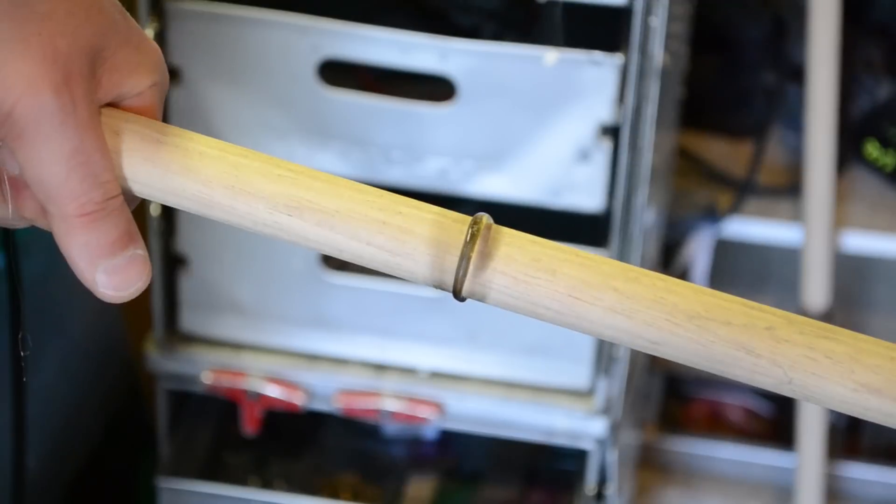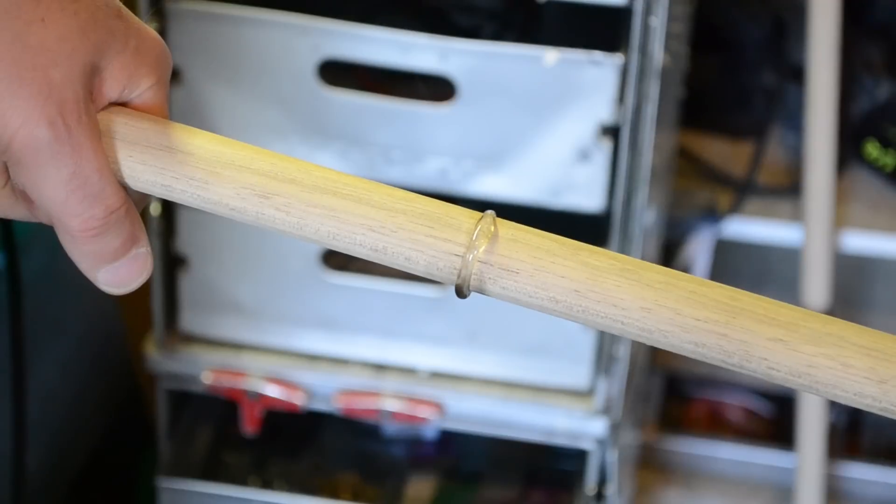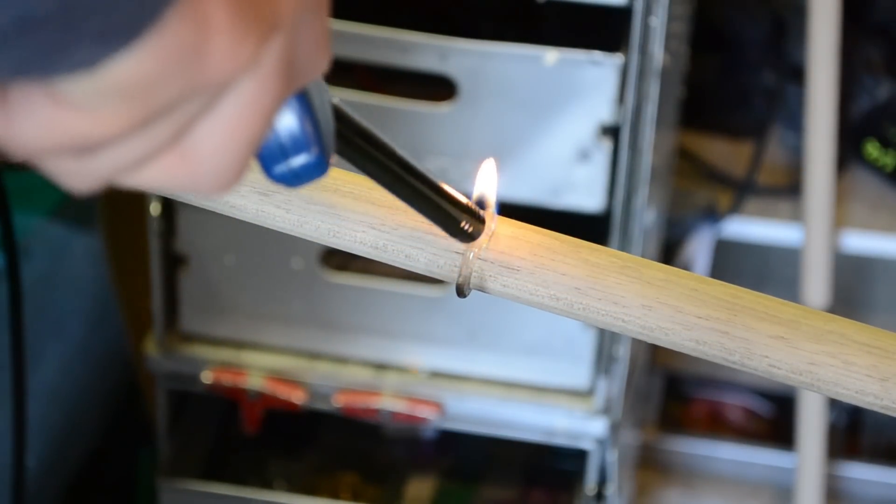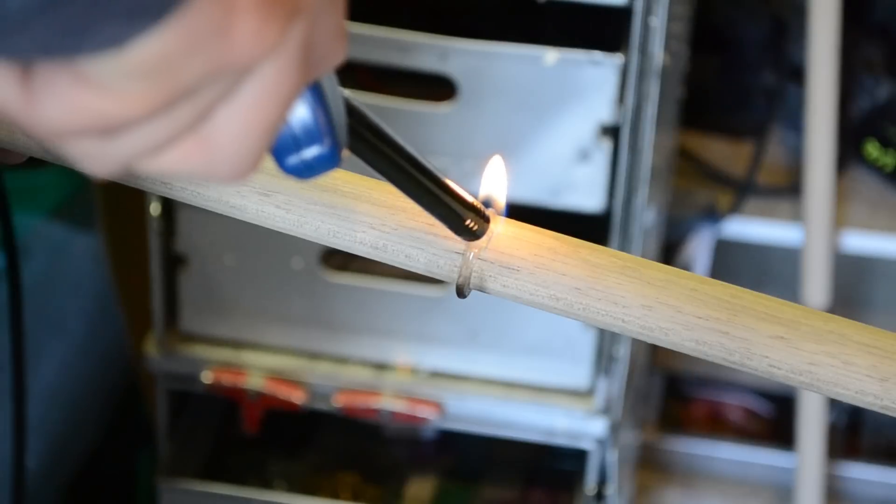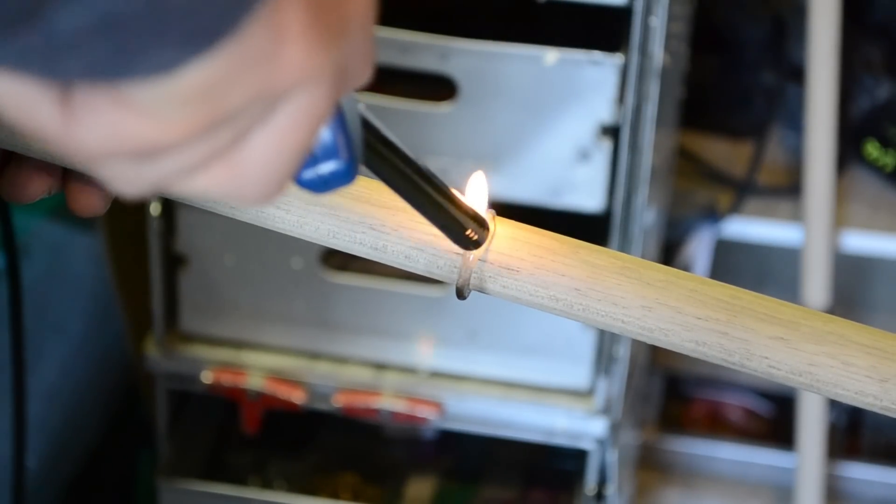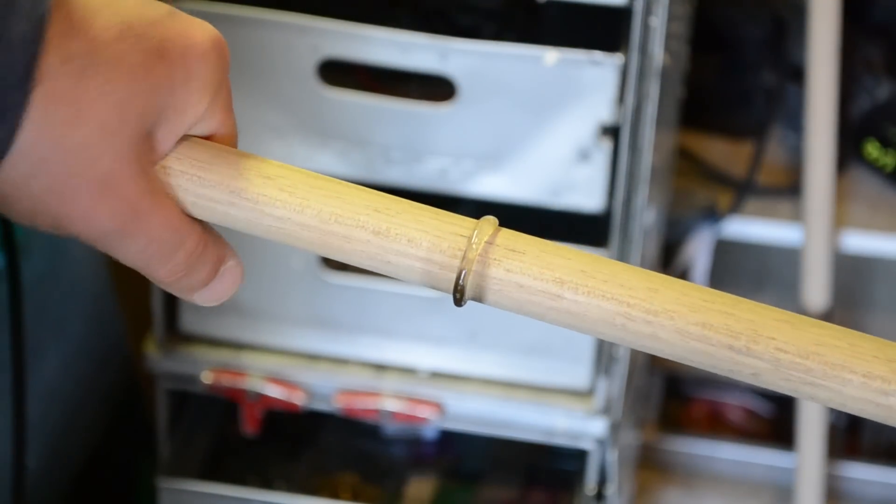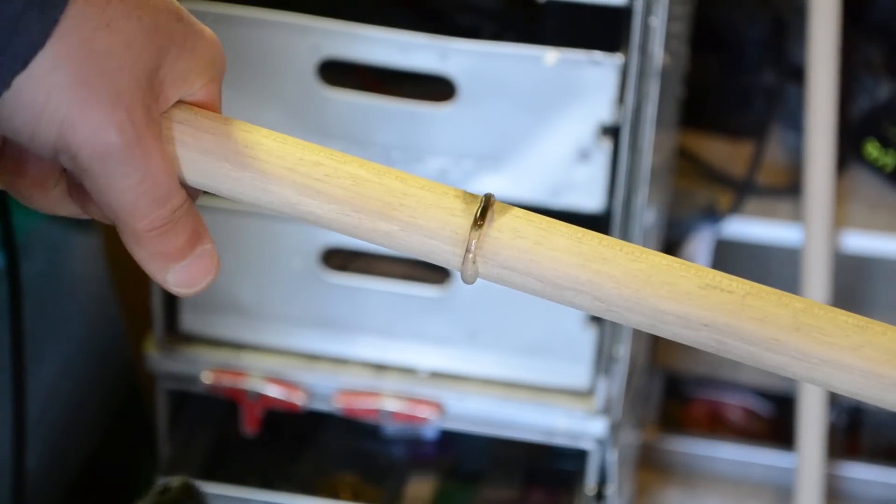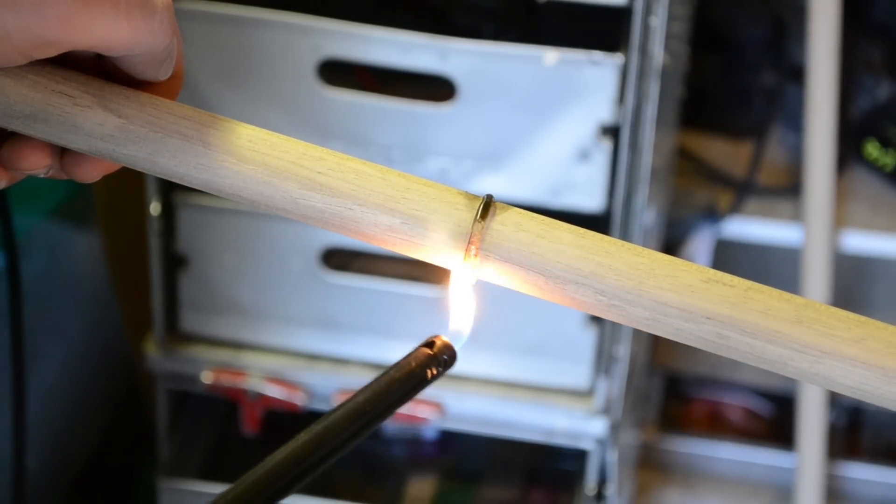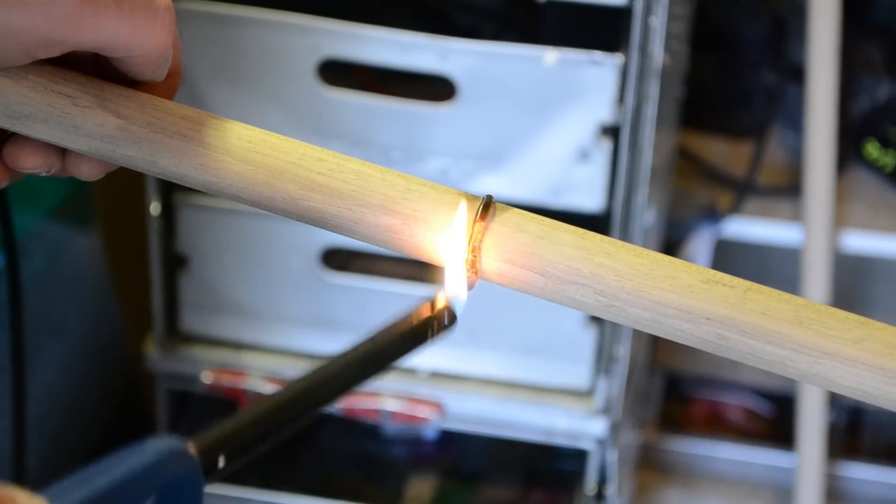And when we're done, we get this kind of darkened area like that. This part needs a little more. Actually, I'll rotate that down to the side here. Around to there. So that we get the top of the flame there to darken it up a little more for us. So it gets that sort of charred look too, which is really what we want.